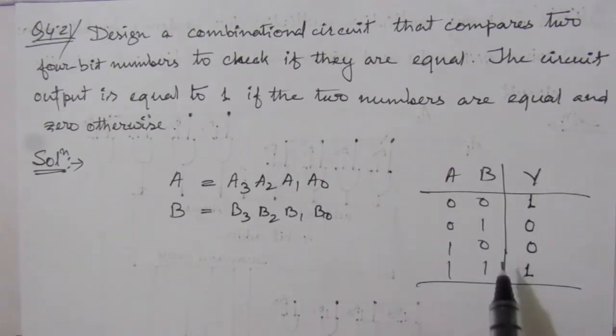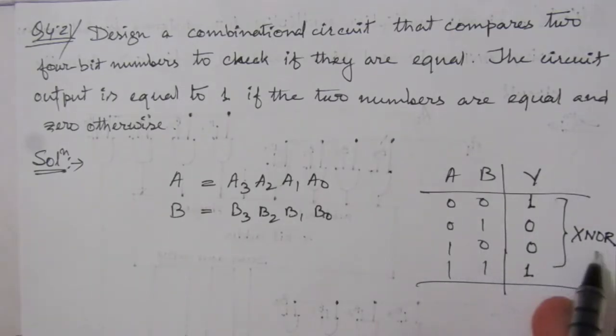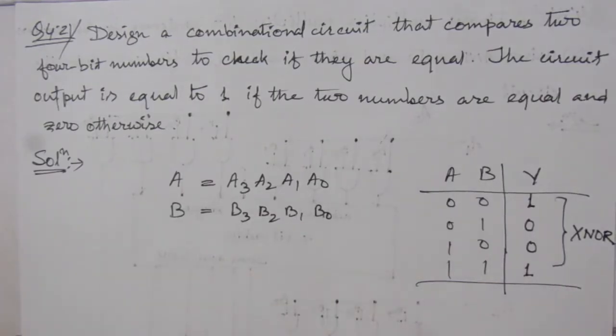Now, if we see this table carefully, we can see that this truth table represents the truth table of an XNOR gate. So what we will do, we will use XNOR gate to realize this comparison circuit.